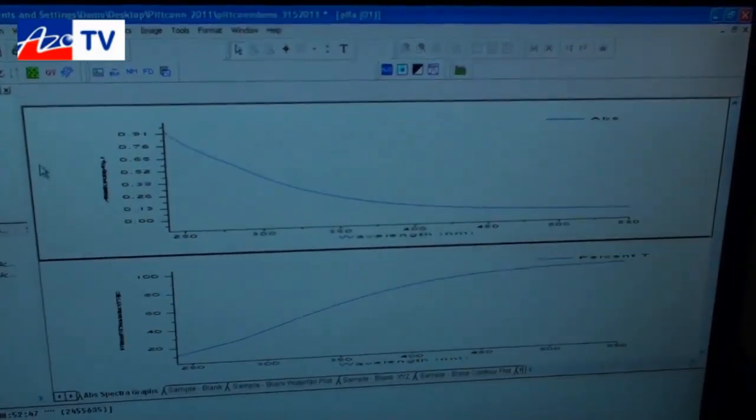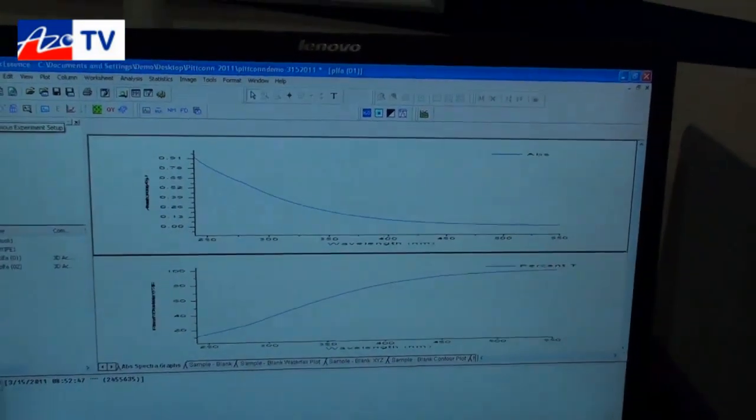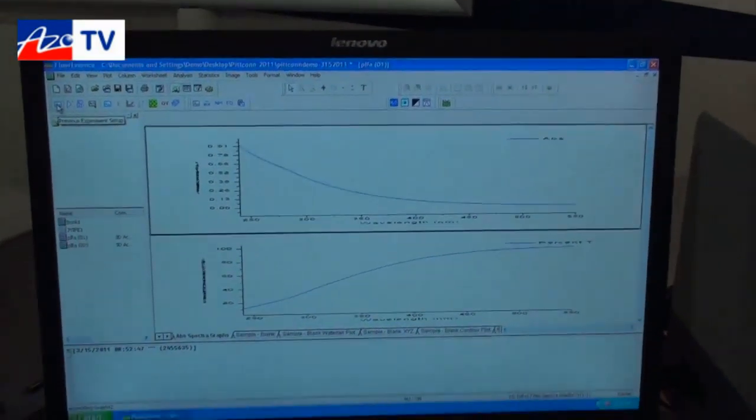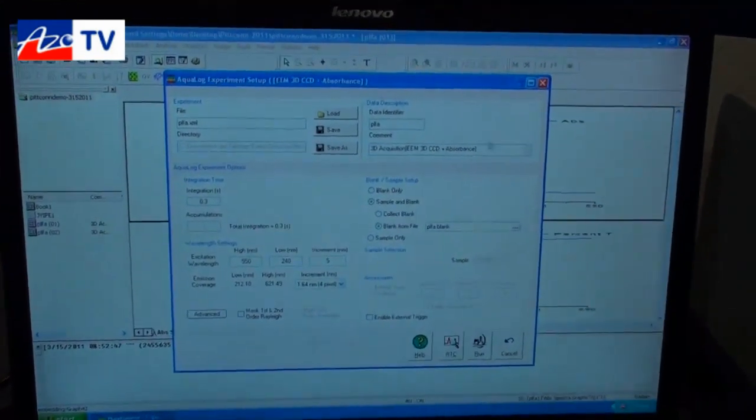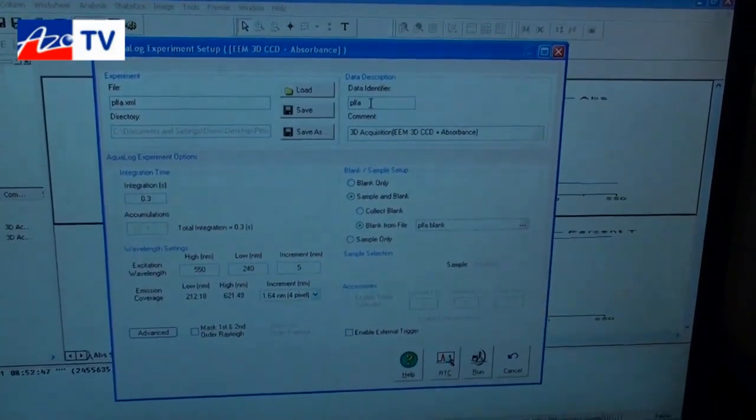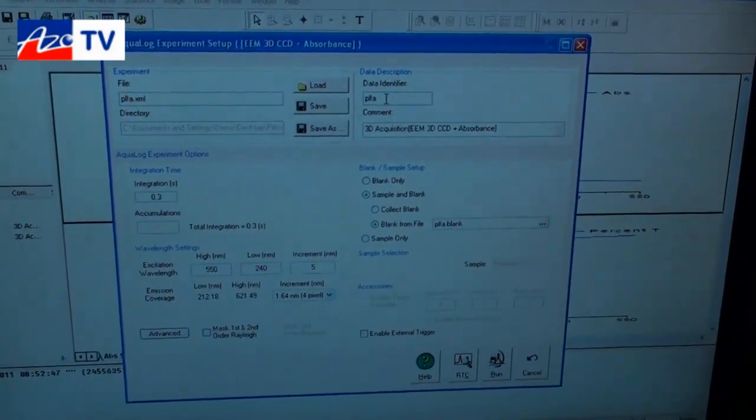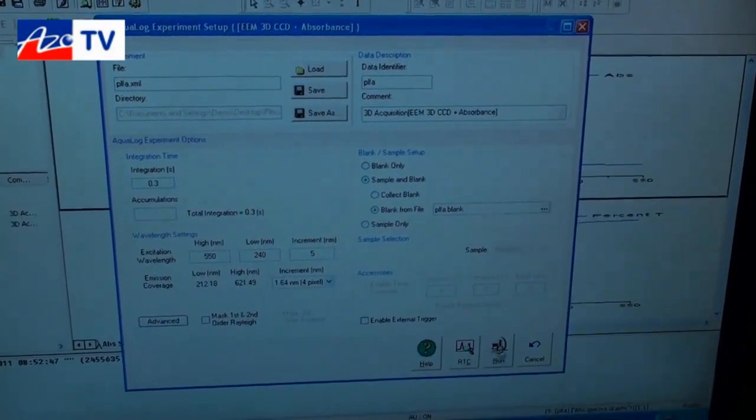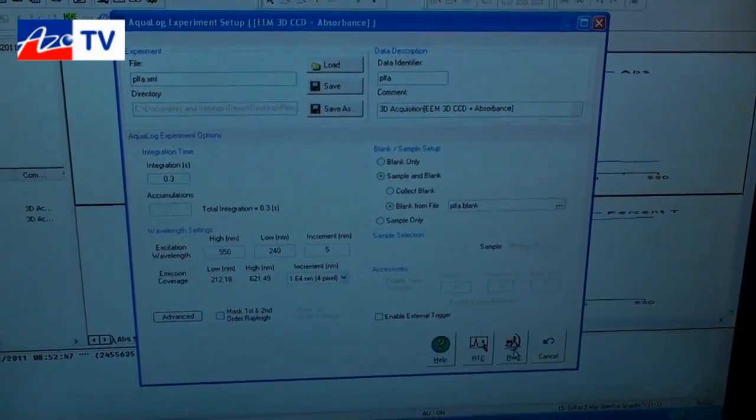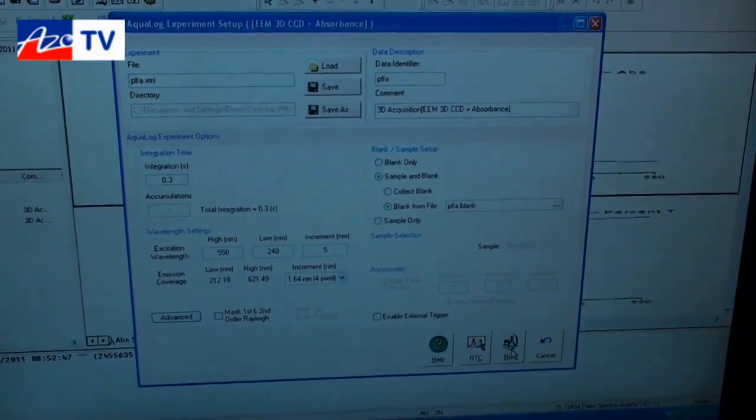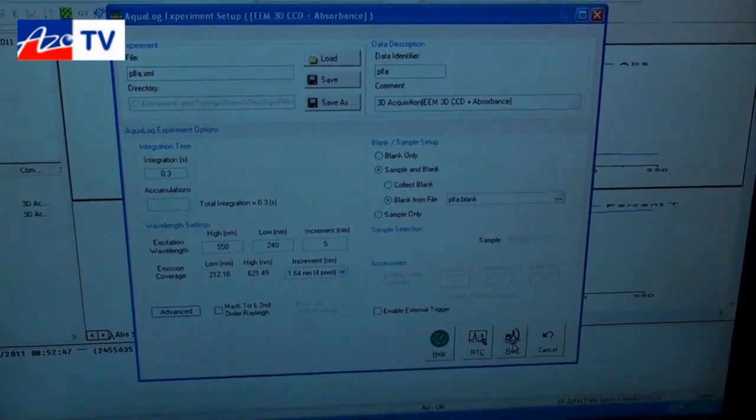As we mentioned before, the data collects roughly a hundred times faster than anything that's on the current market today. So we'll give you a brief demonstration of a collection of the sample. This sample is actually a standard sample from the International Humic Substance Society. It's known as the Pony Lake Fulbic Acid Sample. And so many water quality researchers use this sample as a target to validate their multivariate analysis of the excitation emission maps once they've been corrected.